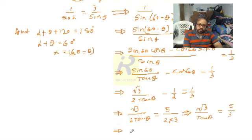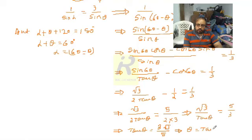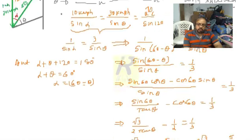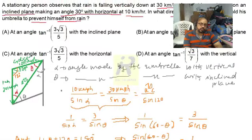So tan theta equals 3 root 3 divided by 5, and therefore theta equals tan inverse of (3√3 / 5). Here theta is the angle made by the umbrella with the inclined plane.